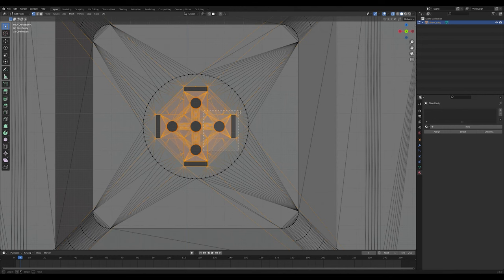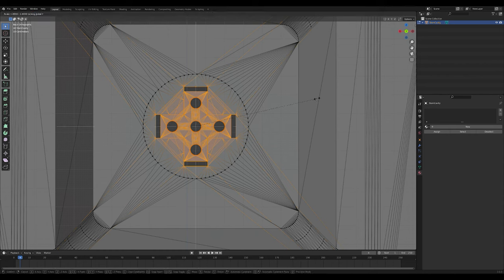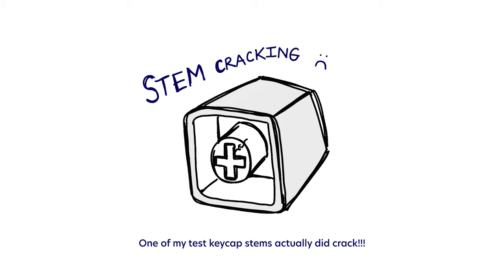My first idea was to simply uniformly scale down the stem by like five percent or so. At the time I thought this would be an easy way to accomplish a tighter fit. But now that I'm looking back on this, it's probably very incorrect and could lead to cracking of your keycap stems.